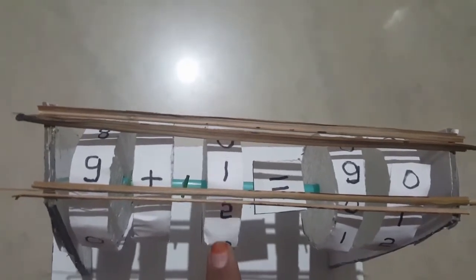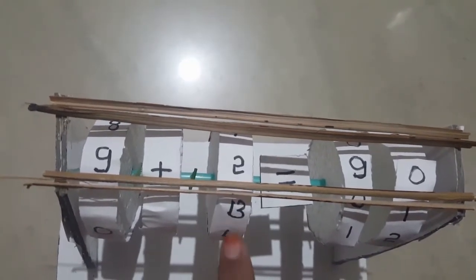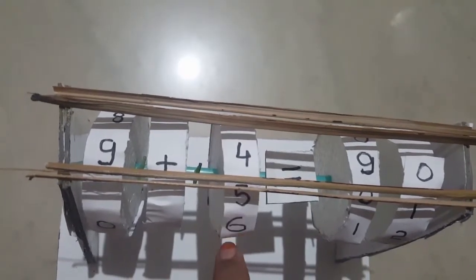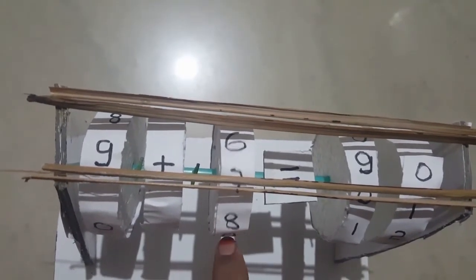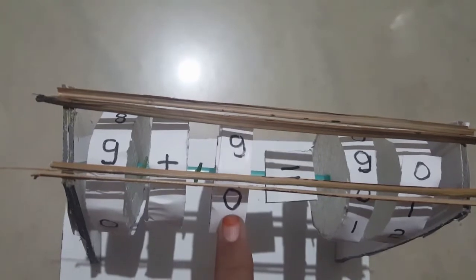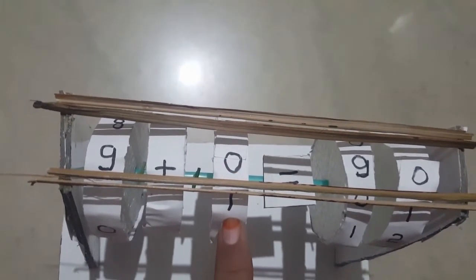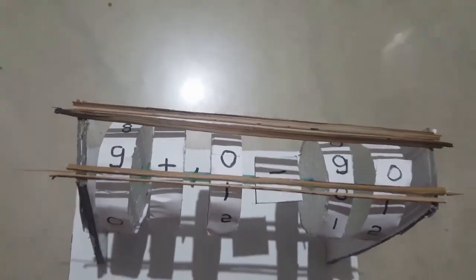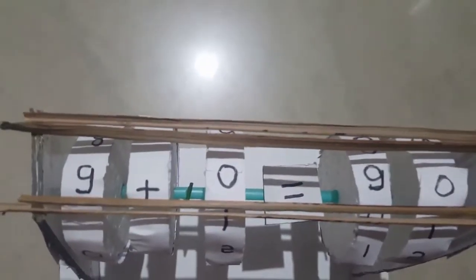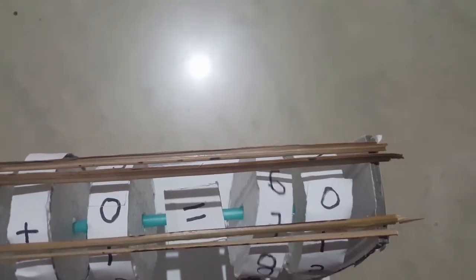This is how you can scroll down and use it. Now I will show you. You can see here, 9 plus 0. You can scroll down. It is just a basic model.